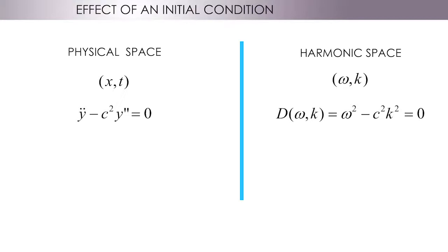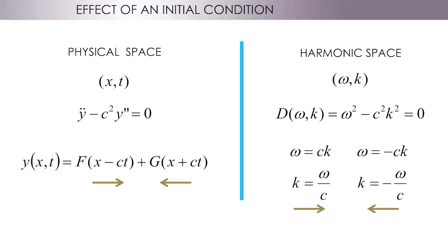The left one has a d'Alembert solution with two waves, a right and a left one. The right one has two k for each omega, or two omega for each k, one positive and one negative corresponding to the two directions.